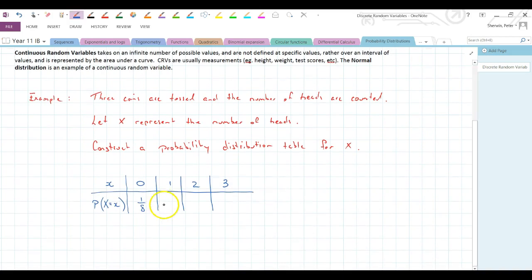So, for one head, well, that could be, again, the outcomes here, I'm thinking, it could be head, tail, tail. It could be tail, head, tail. It could be tail, tail, head. Like that. So, there's three outcomes, all worth one eighth. So, that'd be three eighths. And if you look at two heads, yeah, that's head, head, tail. So, it's going to be the same, isn't it? Head, tail, head, tail, head, head. Again, three outcomes, all worth one eighth. So, three eighths there.